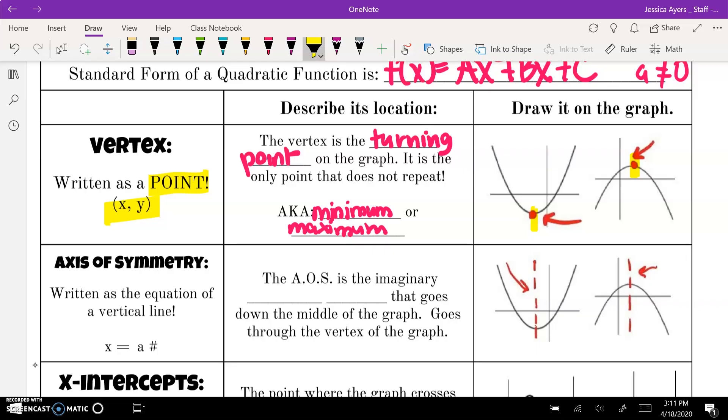The axis of symmetry is the imaginary vertical line that goes down the middle of the graph. It goes through the vertex of the graph. It's vertical, so when you write it, it's the equation of a vertical line. You have to write the x equals piece, because otherwise it's no longer a line. Whatever the x value is of your vertex is the number that your x is equal to in the axis of symmetry.